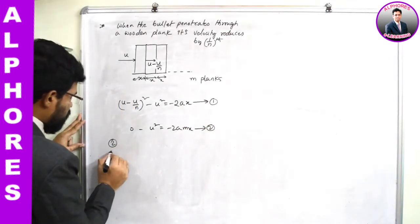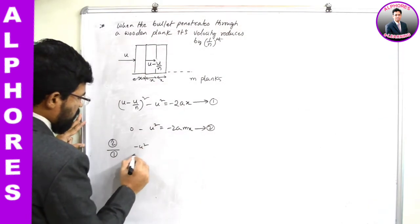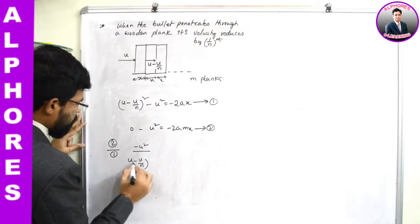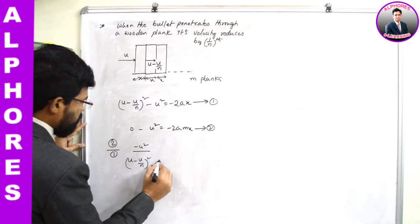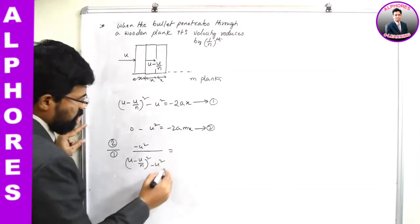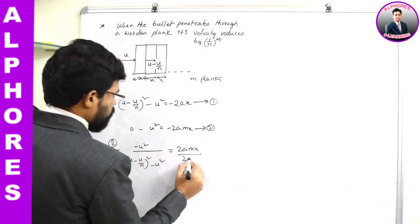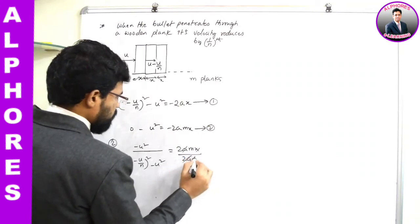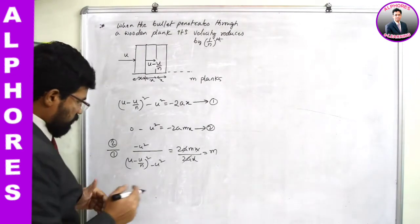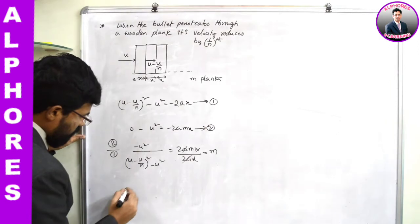Now I am going to divide equation 2 by equation 1. Dividing: -u² / [(u - u/n)² - u²] = 2a(mx) / 2ax. The 2a and x cancel on the right-hand side, giving m. Then multiplying the negative sign into the denominator, u² comes to the first place.